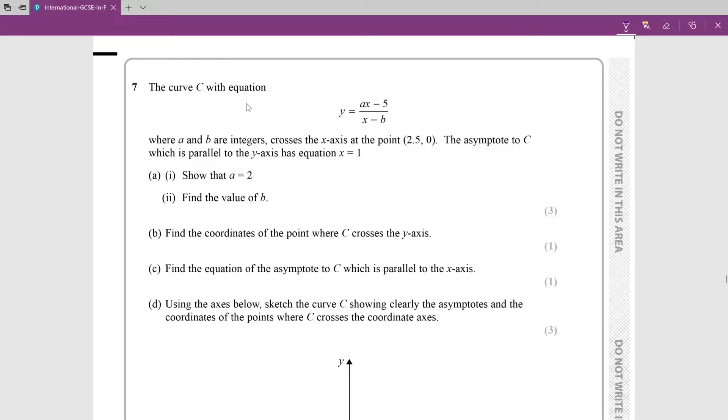Hello everyone. Today we're going to be going over question 7 from paper 2 of the sample assessment material. The curve C with equation y equals ax minus 5 over x minus b, where a and b are integers, crosses the x-axis at the point (2.5, 0). The asymptote to C which is parallel to the y-axis has equation x equals 1.